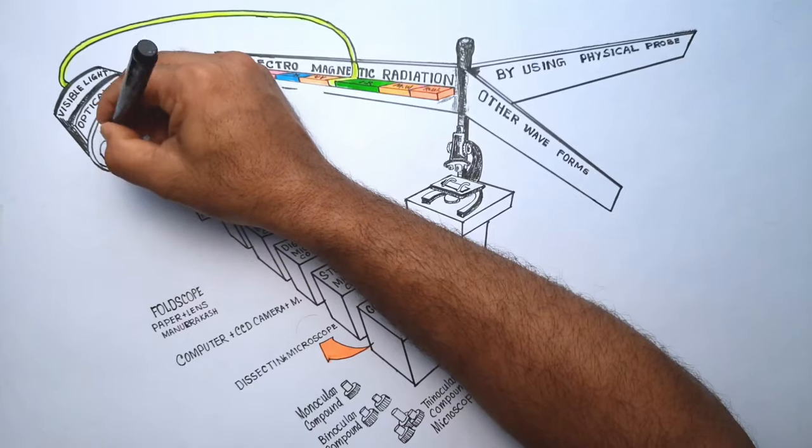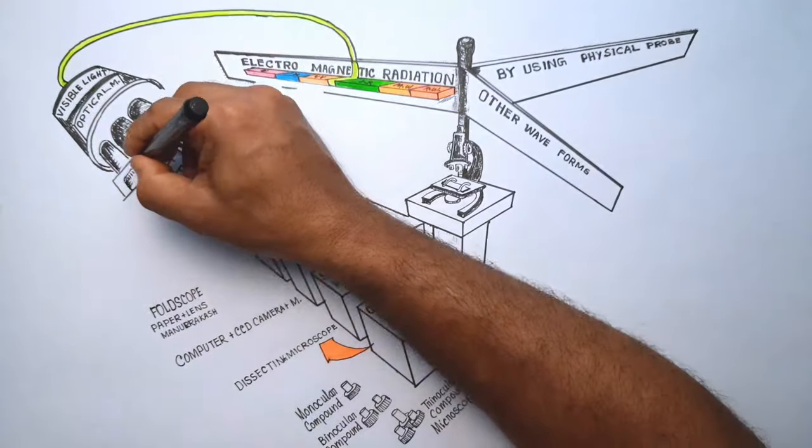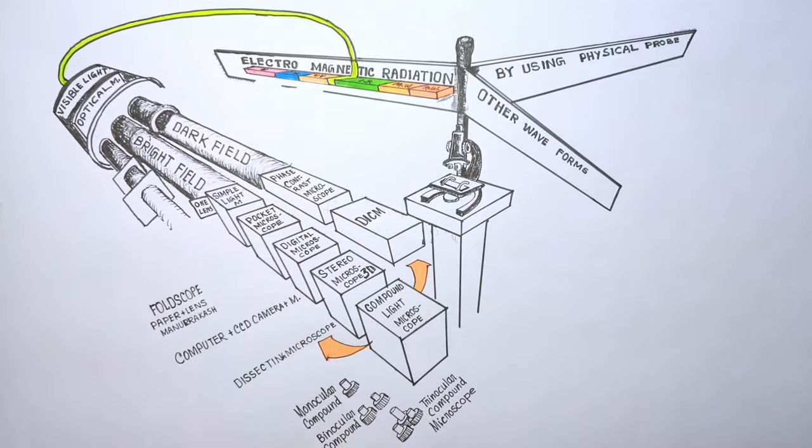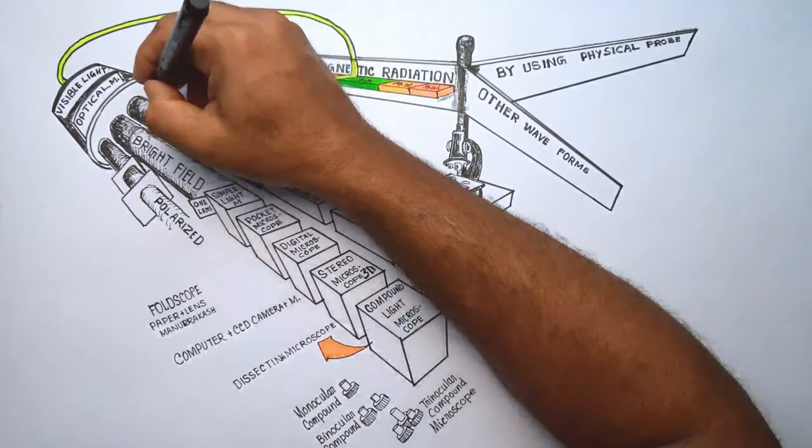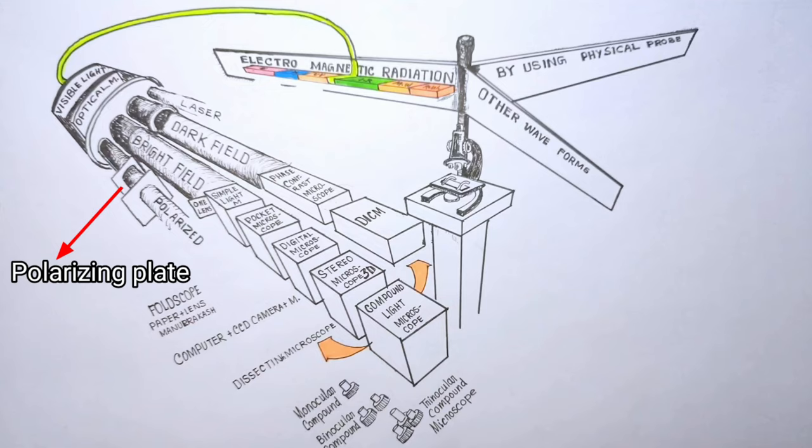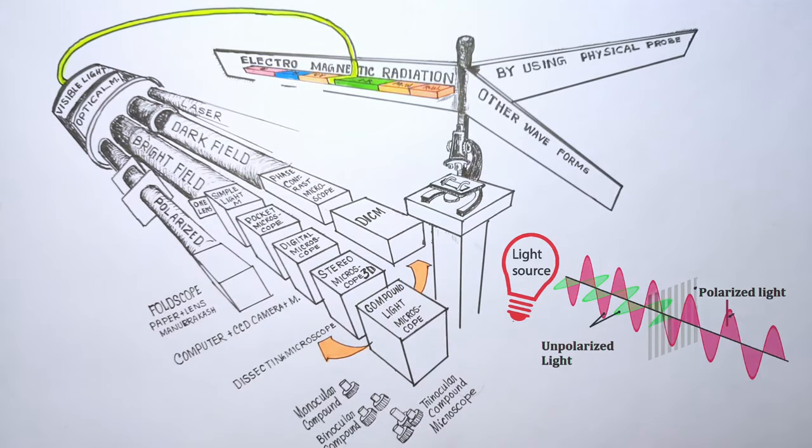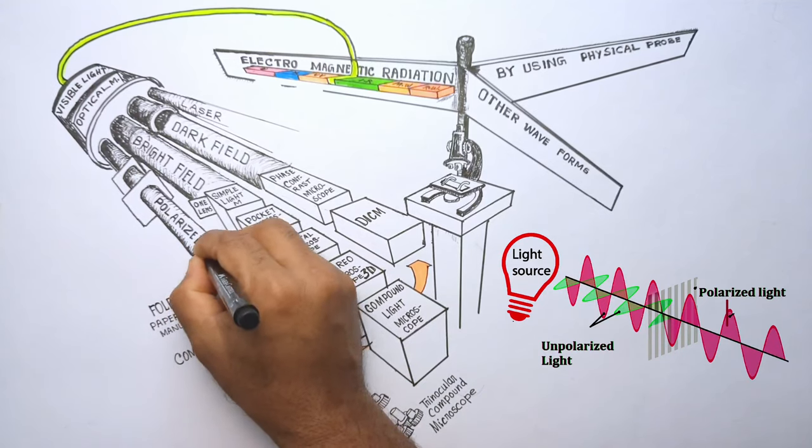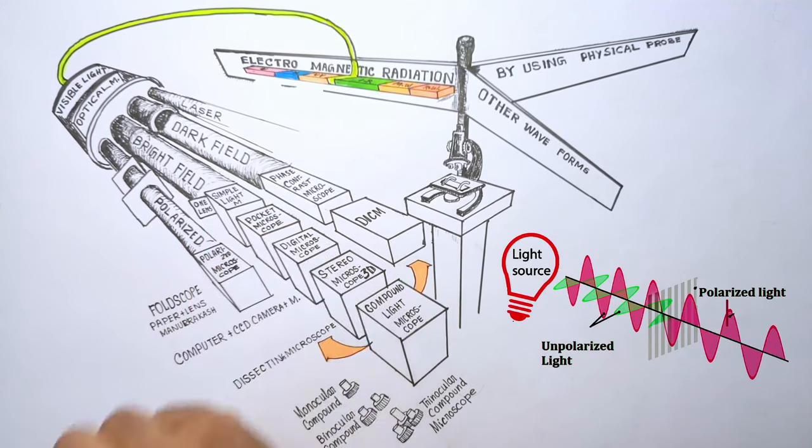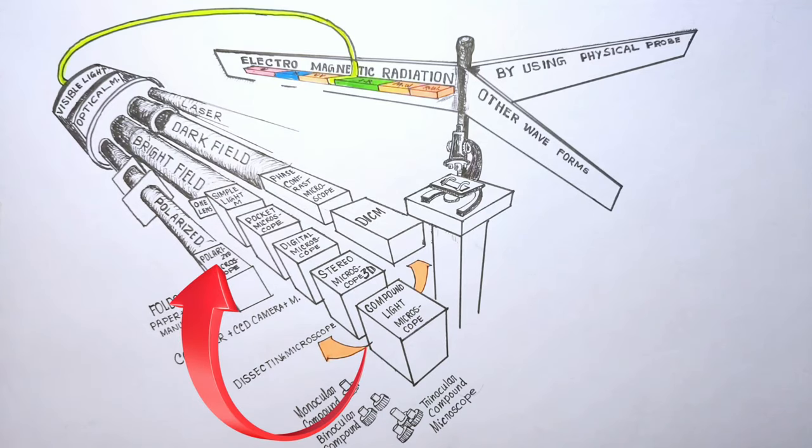The next two types of optical microscopes do not use visible light as it is but use modified forms of visible light like polarized light and laser light. By using a polarizing plate and an analyzer it is possible to transform the unpolarized light into polarized light, that is transforming light waves vibrating in more than one plane into waves which vibrate into a single plane. Using polarized light in a compound light microscope we can convert it into a polarized microscope. Specimens of anisotropic character are only visible when illuminated with polarized light. Polarized microscopes are used extensively in optical mineralogy for investigating crystalline structures.